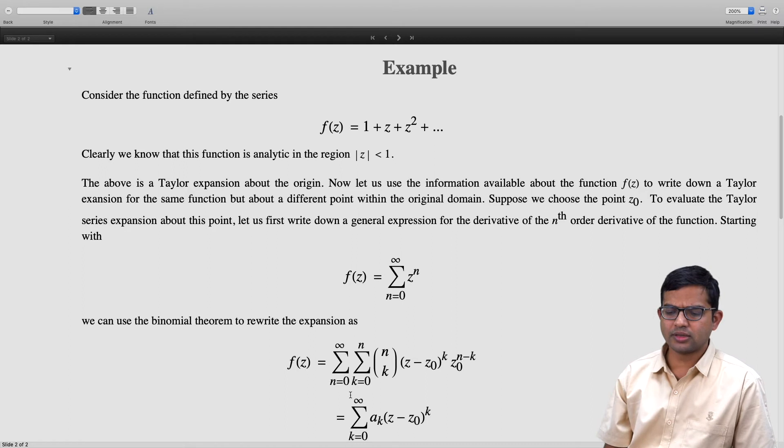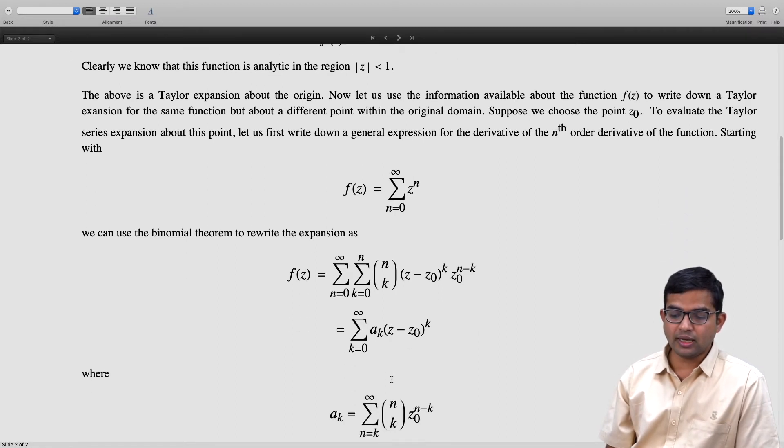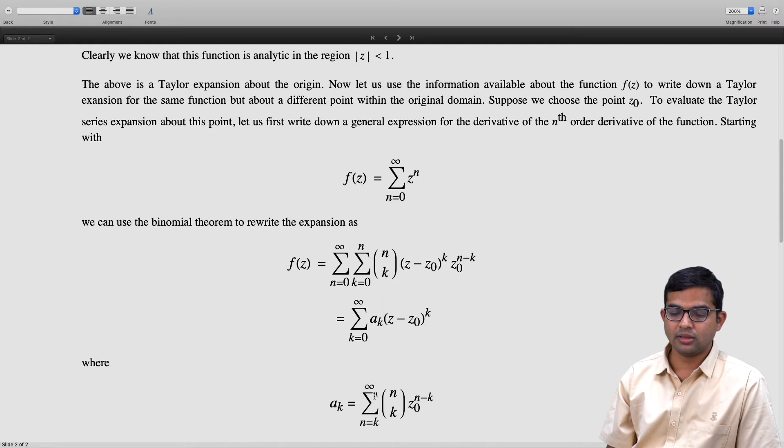Where aₖ is given by summation over n which goes from k to infinity, n choose k times z₀^(n-k). I am just using the fact that I am collecting all these terms where powers of (z - z₀)^k come up.